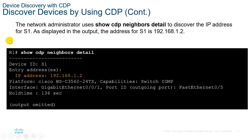The network administrator can use 'show cdp neighbors detail' to discover the IP address of Switch 1, which shows as 192.168.1.2. This command also reveals the platform, interface, hold time, and device ID. That covers the CDP overview.